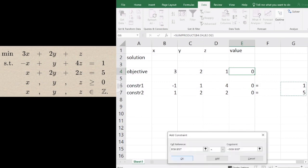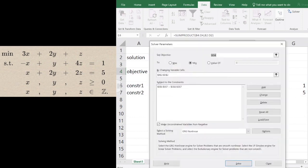We'll solve the linear programming relaxation first, so we're not going to impose any integer constraints. Let's change to Simplex LP. We're requiring the variables to be non-negative, so we should leave this checkbox checked. If we click Solve, we'll get an answer.